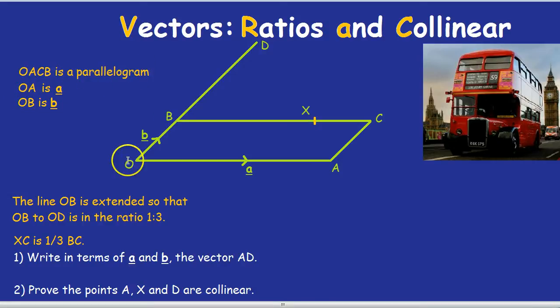OACB is a parallelogram. OA is the vector a, and OB is the vector b. Why did they tell us it's a parallelogram? That's so we can deduce that if OA and BC are parallel, because it's a parallelogram, they're the same vector.